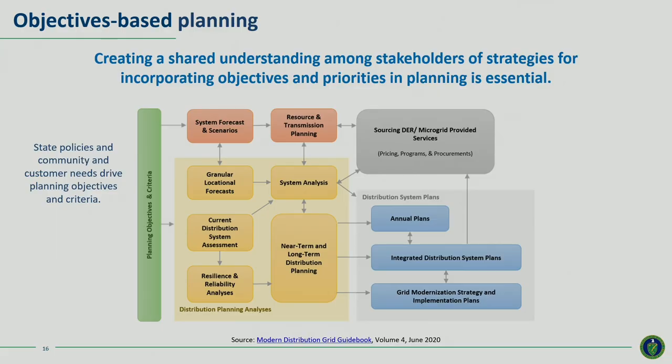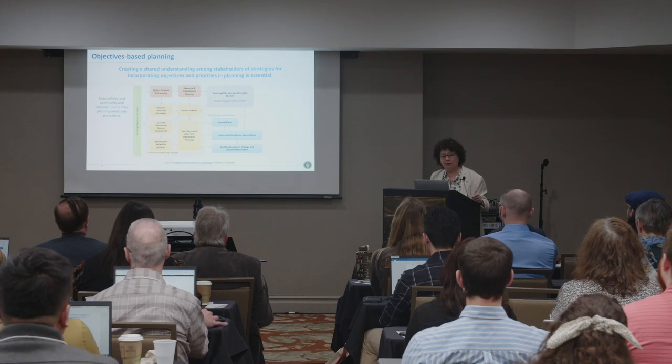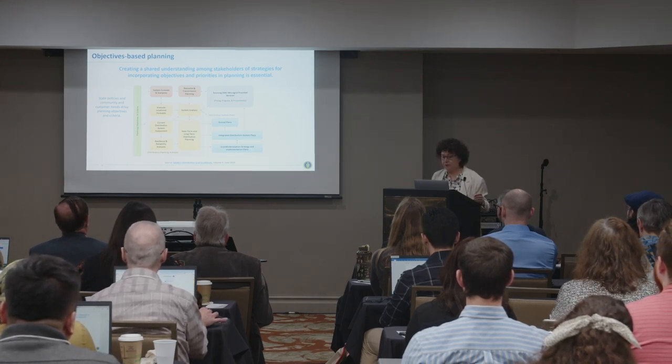In the upper right gray box are ways to source distributed resources for some types of grid needs, and we talk about pricing, programs, and procurements. By pricing, we mean time-varying pricing of different kinds: critical peak rebate, critical peak pricing, real-time pricing, standard time-of-use pricing, and variations including variable peak pricing for electric vehicles and for homes and businesses. Programs include everything from energy efficiency to newer storage programs. Procurements refer to solicitations for non-wired alternatives of different kinds. Stakeholder engagement is especially important at the beginning and end of the process, but there are also opportunities during forecasting assumptions, scenarios, and identifying grid solutions.